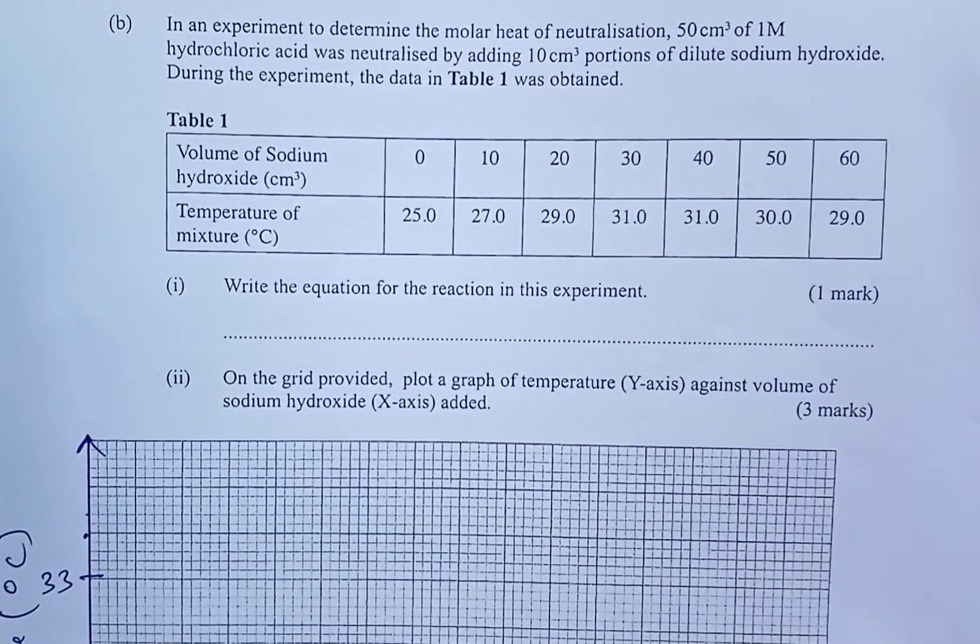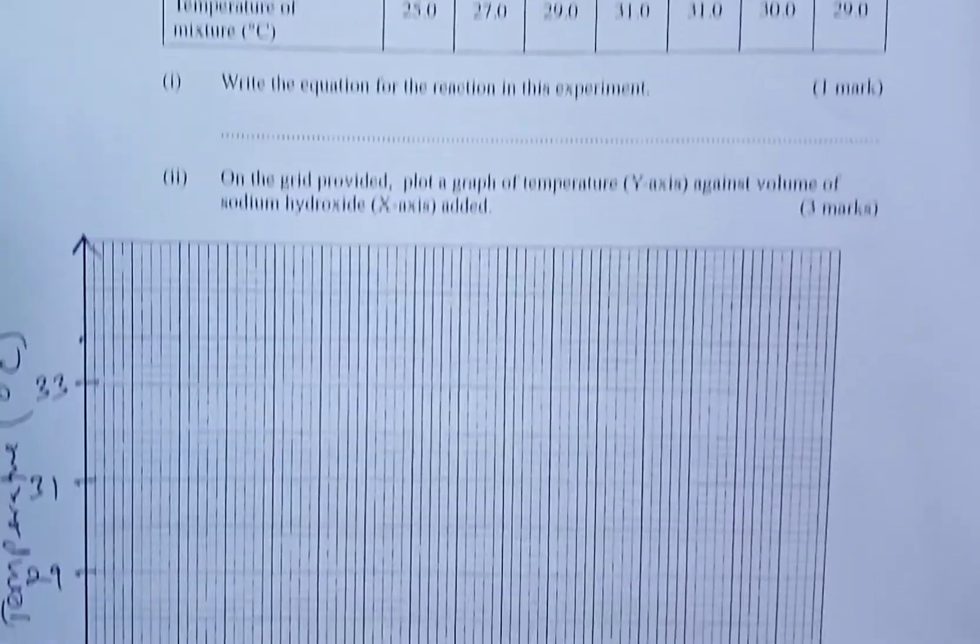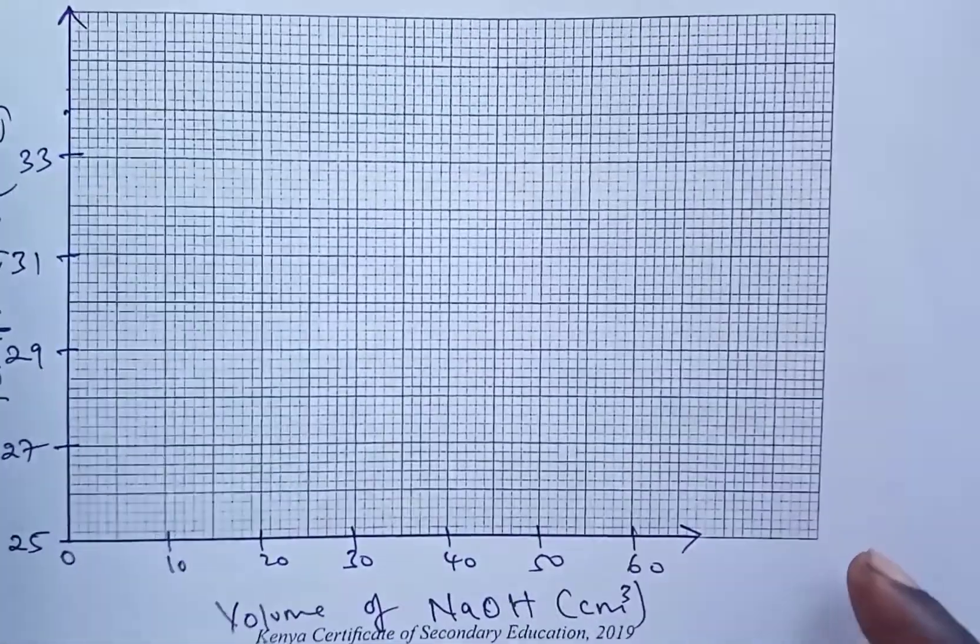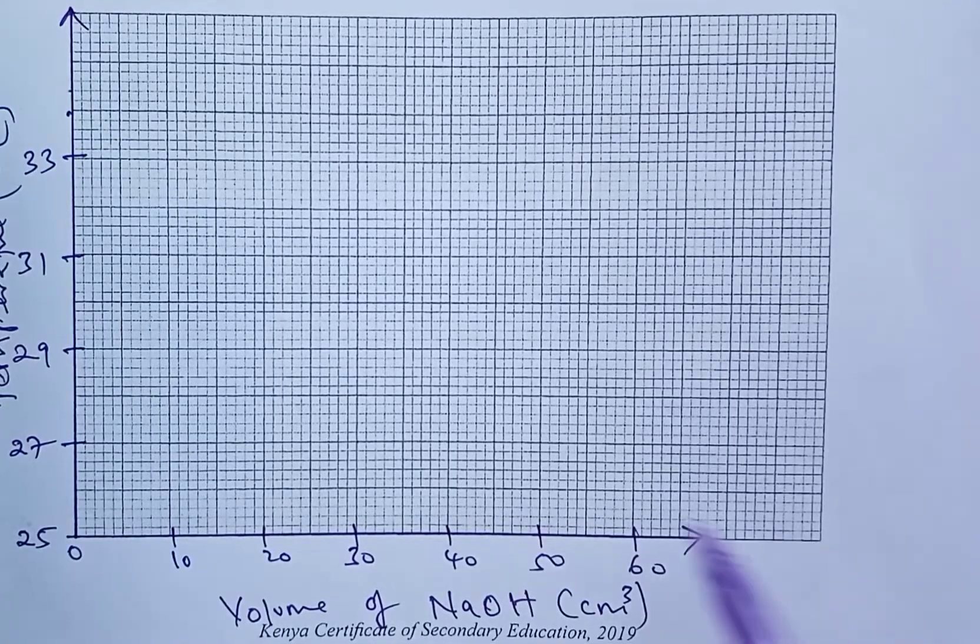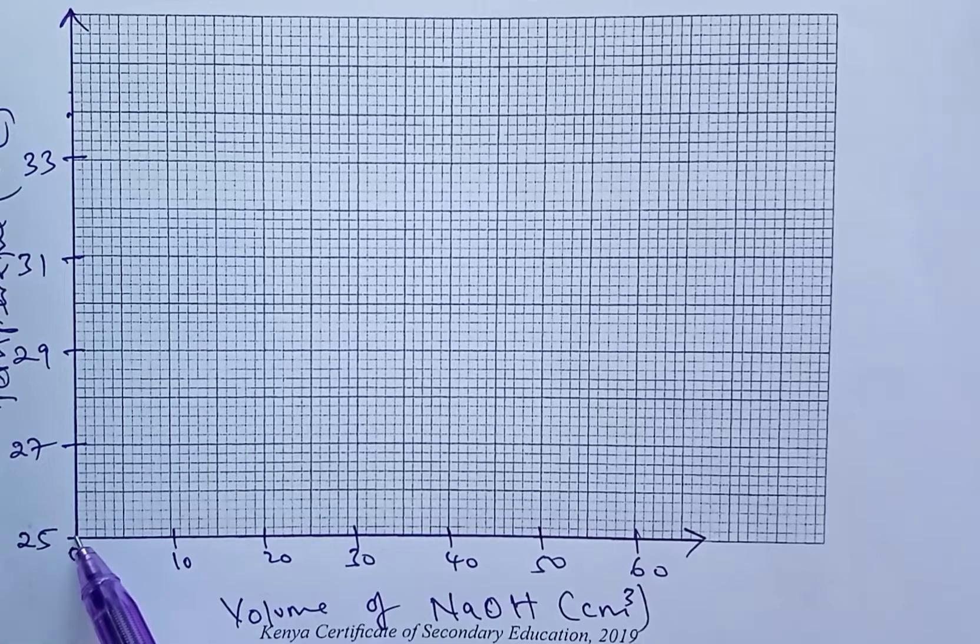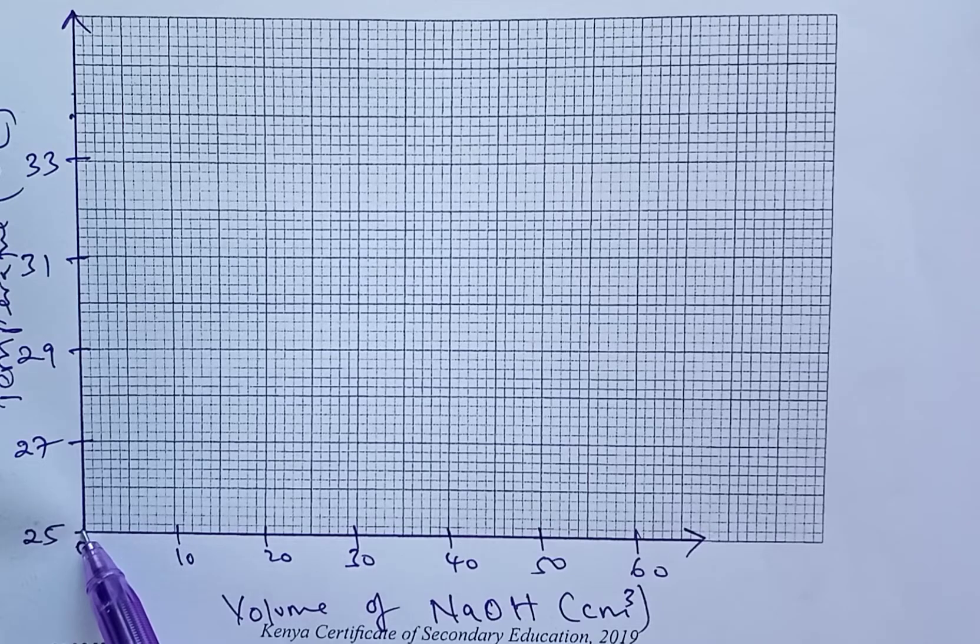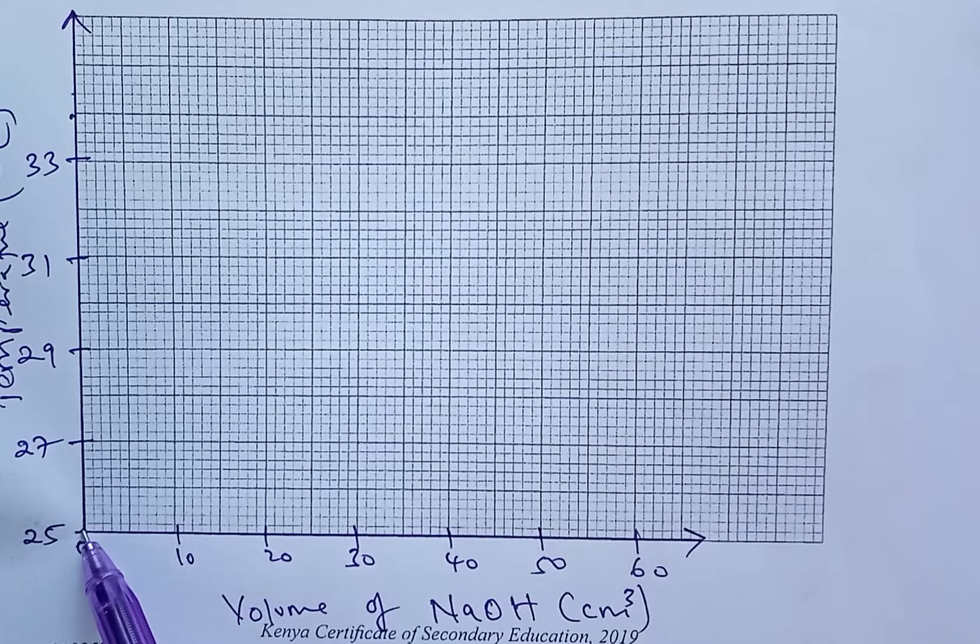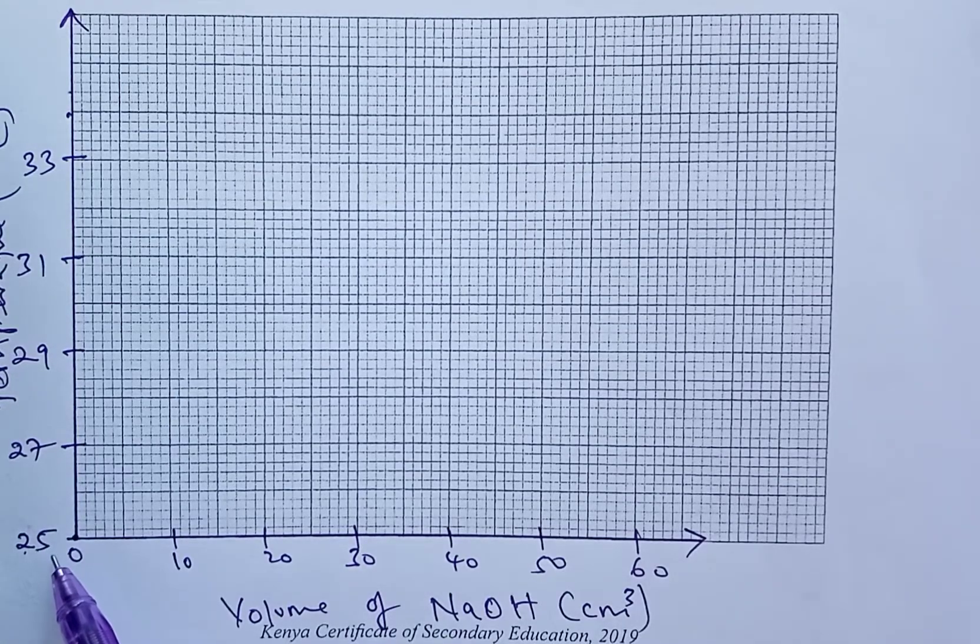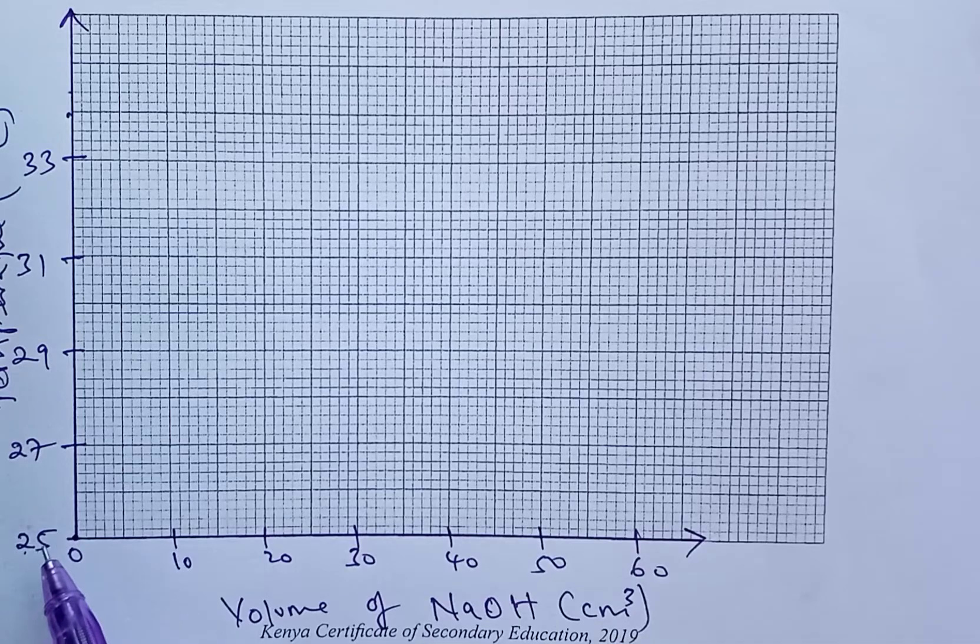Here is my sample two. Using the same data in the table, you find a student that has done the same thing for the x-axis. And then for the y-axis, the least figure that we had for temperature was 25, and he decides to put that at the origin. This is allowed.